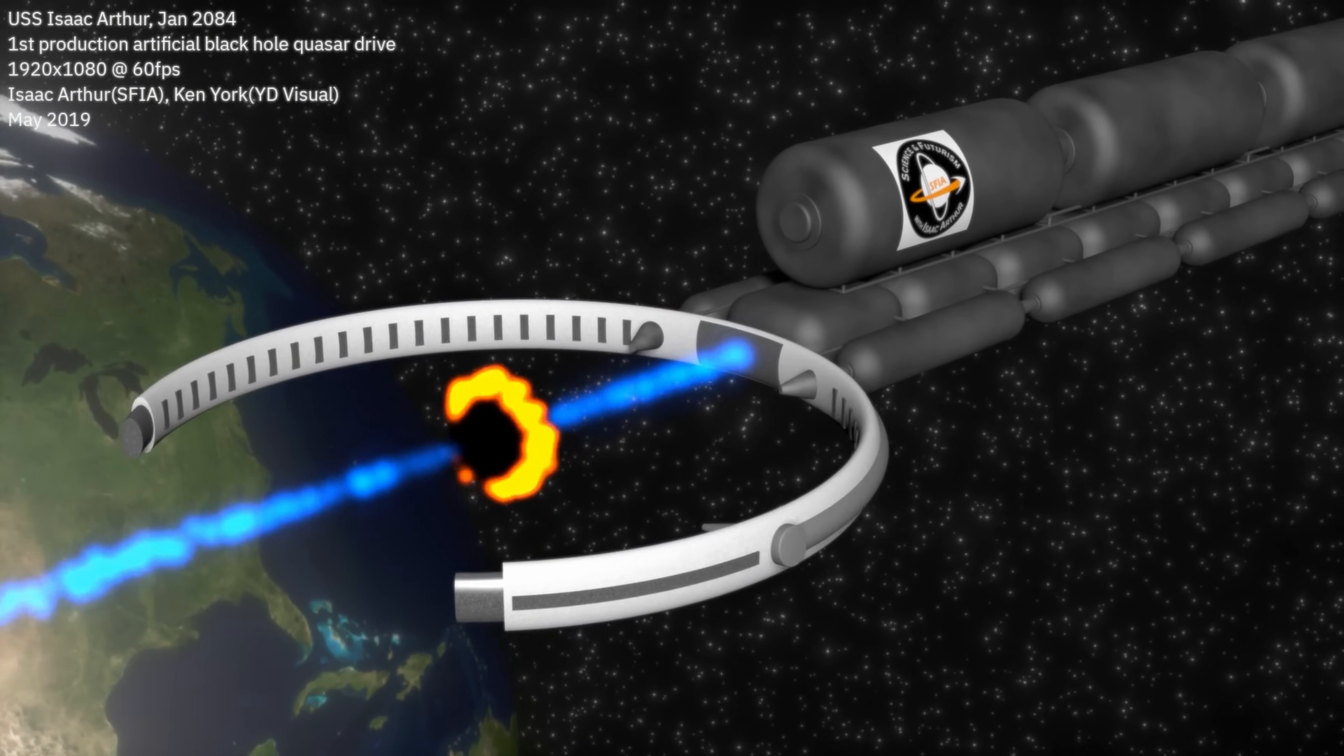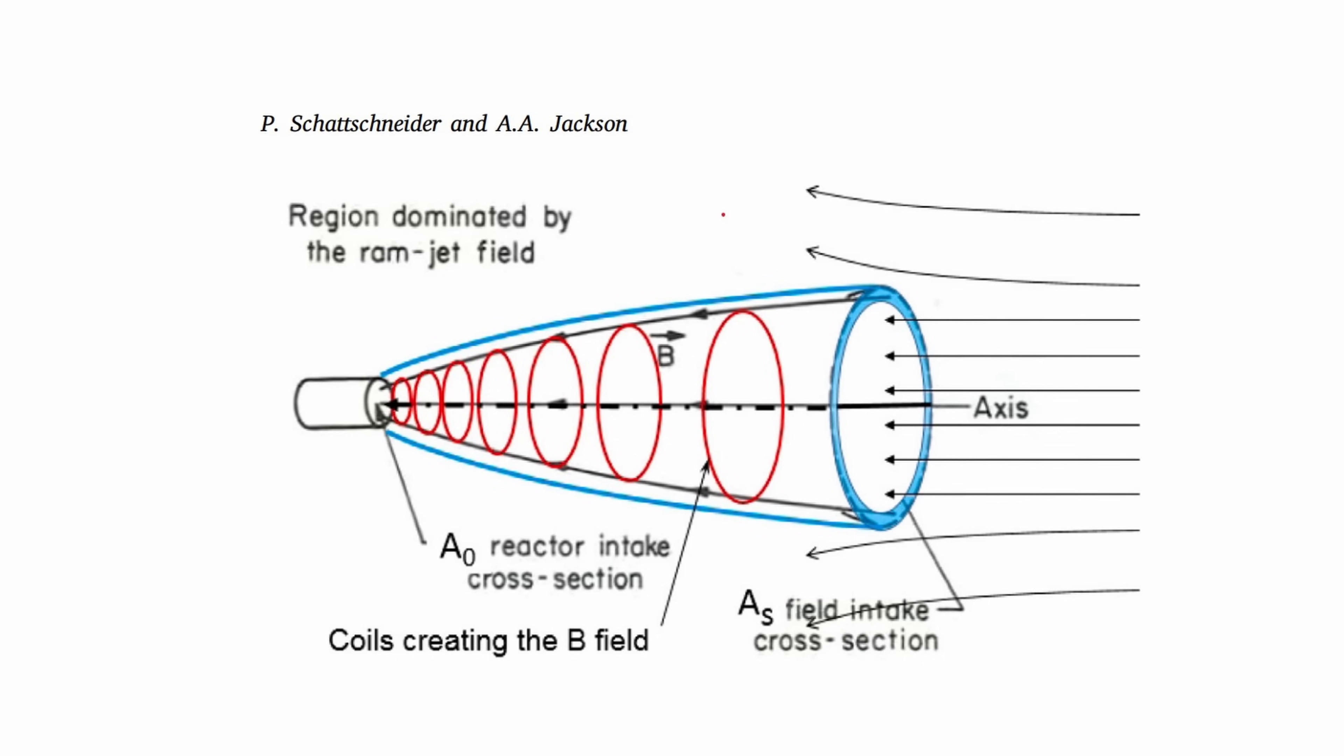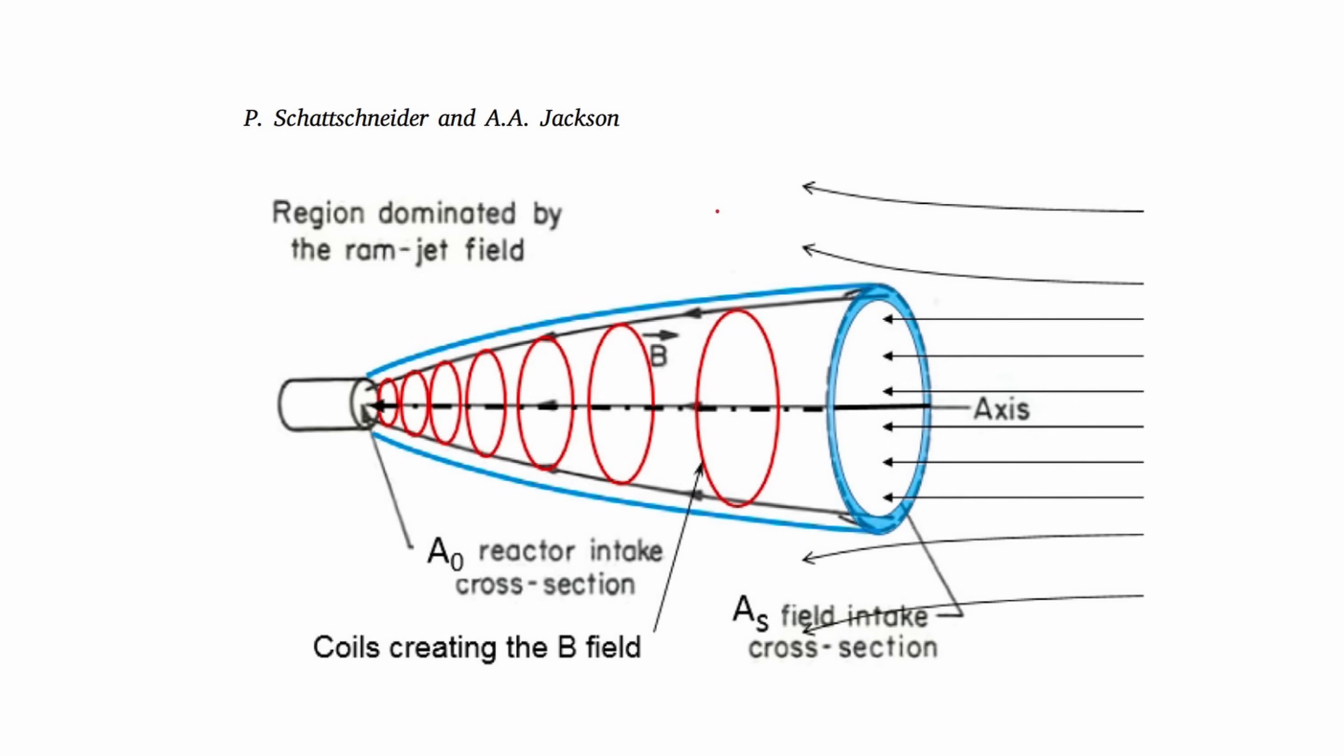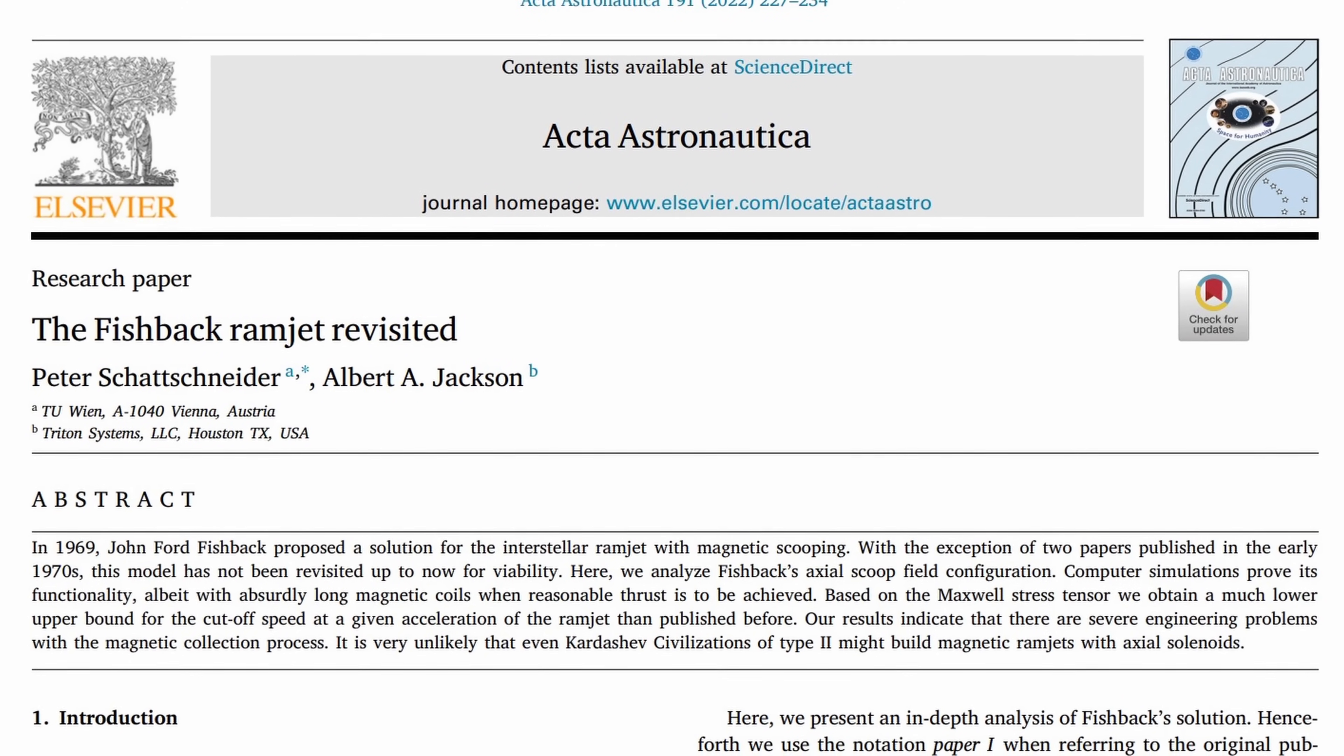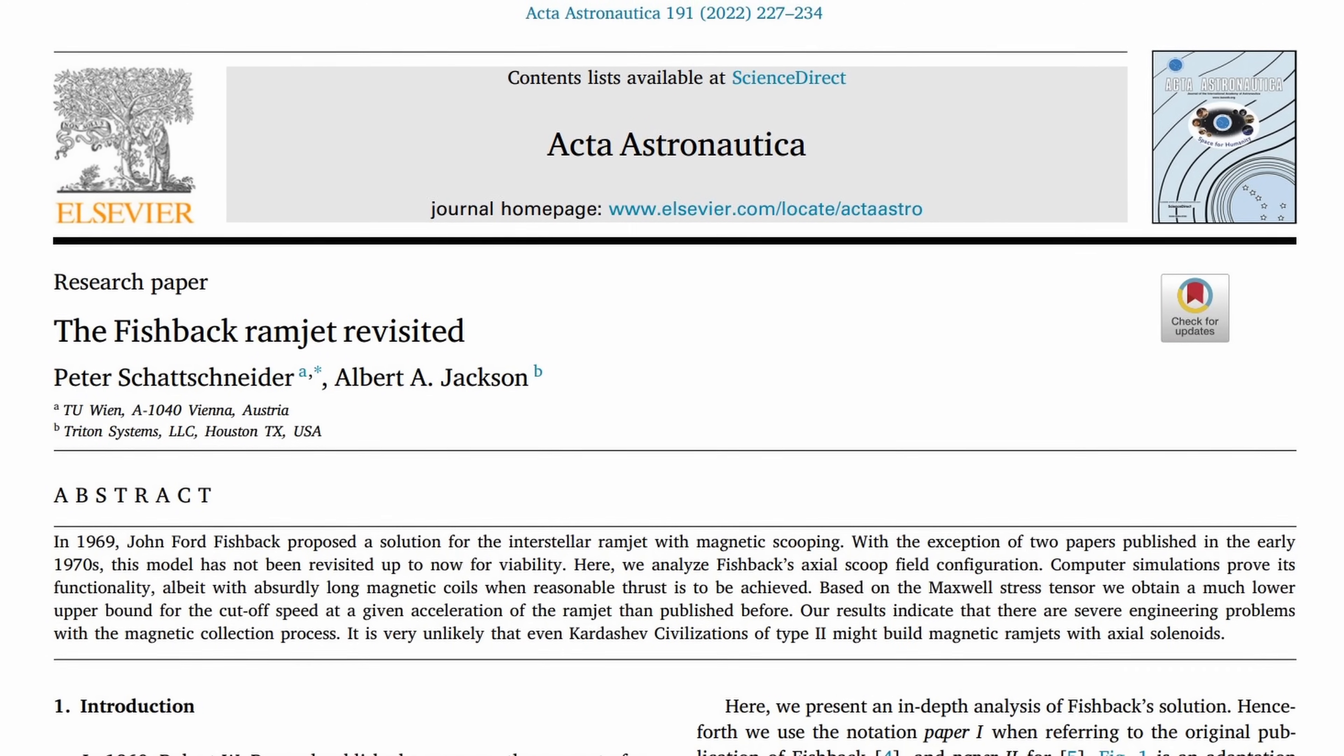Let's start with the better known one, the Fishback Ramjet, which John Fishback proposed back in 1969. And this is the first detailed one, as Bussard and Carl Sagan had both discussed the idea before, but Fishback went into the details on how the scoop would need to work. Again, those are unfortunately too technical to dip into here, but focus on using a magnetic scoop and an axial solenoid. If you want that deep dive, I will instead recommend that paper from last year written by Peter Schatznider and Albert Jackson, as I feel that covers the topic, its problems, and possible solutions better than various prior papers did.